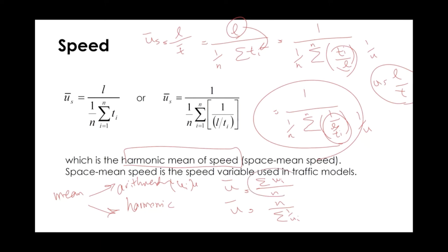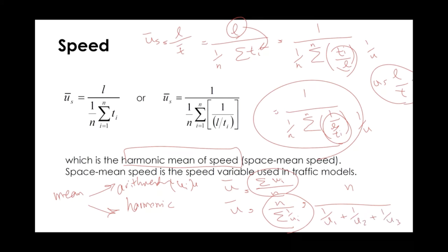So we have two types of mean. The arithmetic mean — summation of U_i over N — gives time mean speed. The harmonic mean — N over summation of (1/U_i) — gives space mean speed. This is the harmonic mean formula you may remember from high school or early undergraduate mathematics.